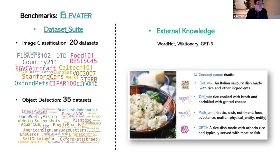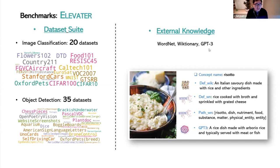Looking at data statistics, we collected 20 image classification datasets and 35 object detection datasets, representing both academic settings and real-world scenarios. For a new task in the world, as humans we often add custom specifications to clarify the task definition. To mimic this spirit, we added external knowledge to all visual concepts in this benchmark, including WordNet knowledge, visual knowledge, and GPT-3 knowledge. This provides rich semantics from the language side, explaining concepts in different ways.